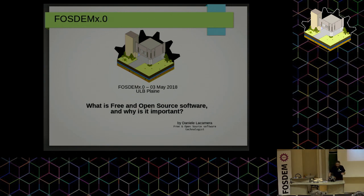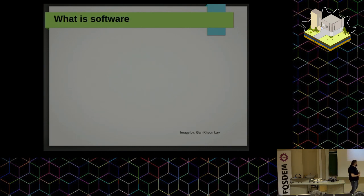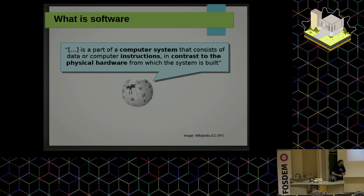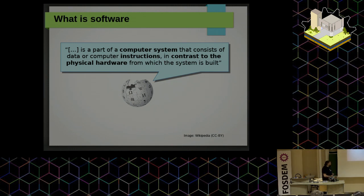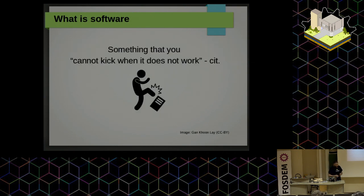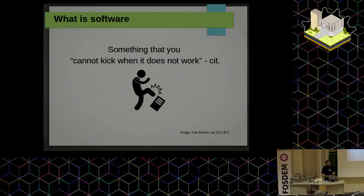The first thing we need to introduce is: what is software? Wikipedia defines it as a part of a computer system that consists of data or instructions, contrasted with hardware — which is fine. But I prefer the definition I'm used to: it's the part of the system that you can't actually kick when it stops working. That's what my teacher at university explained to me.